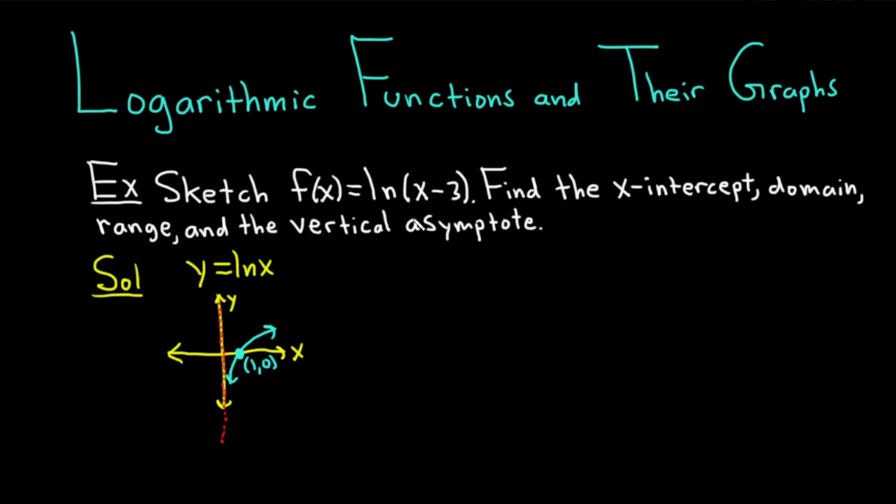Alright, so based off this graph, we should be able to graph our function, which is the natural log of x minus 3. Whenever you subtract a number from the x, you're going to shift right. In this case, we're subtracting 3, so we're going to go right 3.